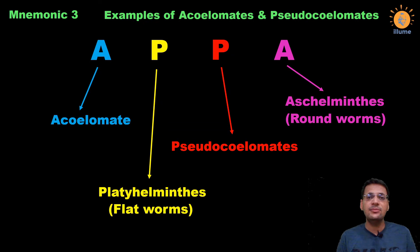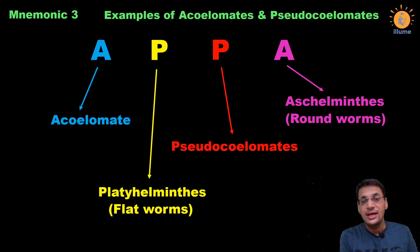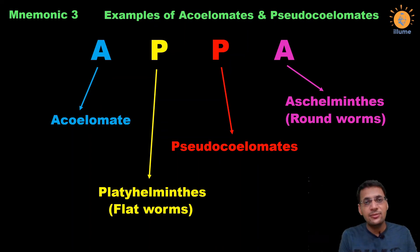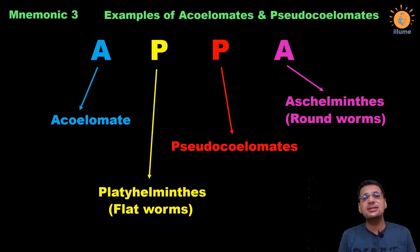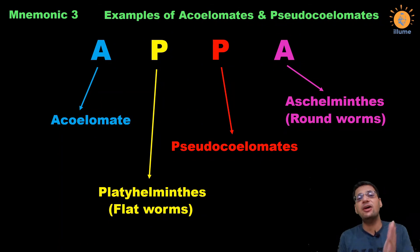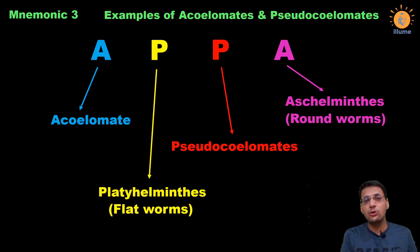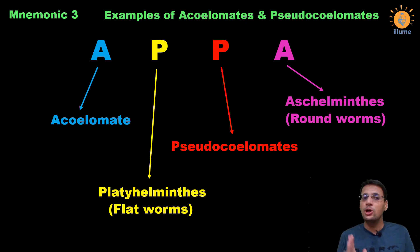The first phylum where coelom is discussed is Platyhelminthes — they have no coelom. The next phylum, Aschelminthes, has a false coelom. All phyla more advanced than Aschelminthes have a true coelom — whether it be Mollusca, Echinodermata, Chordata, or Hemichordata. This makes clear which organisms have no coelom, which have a false coelom, and which have a true coelom.